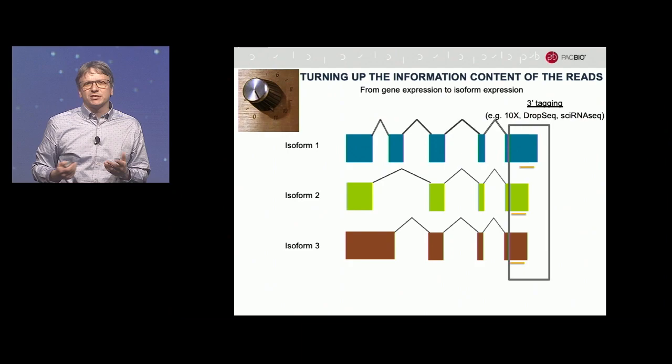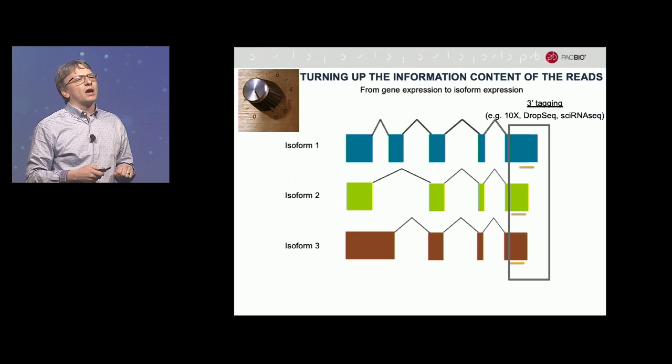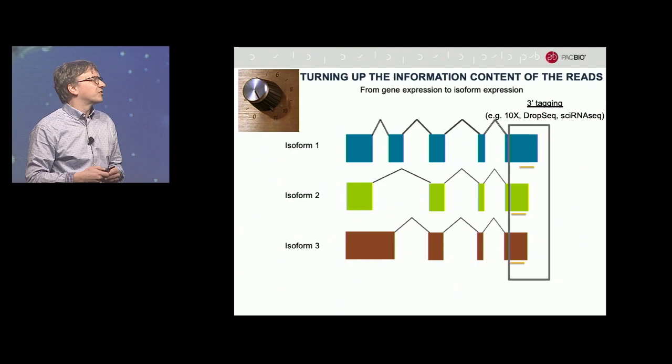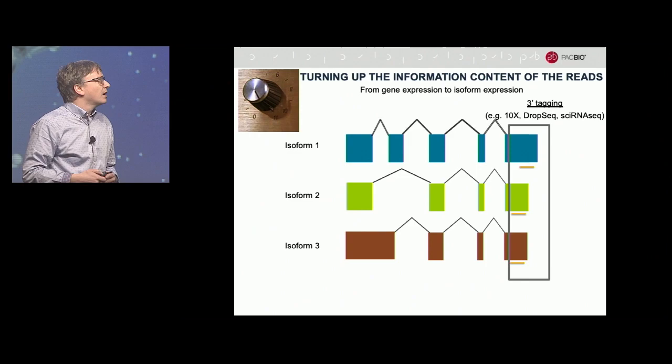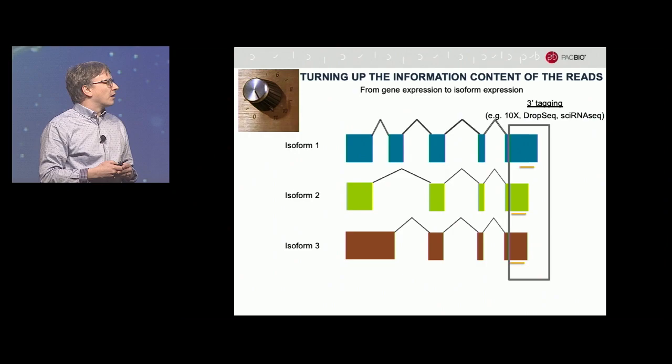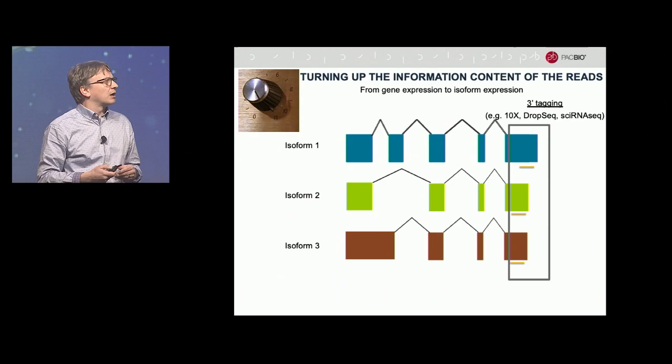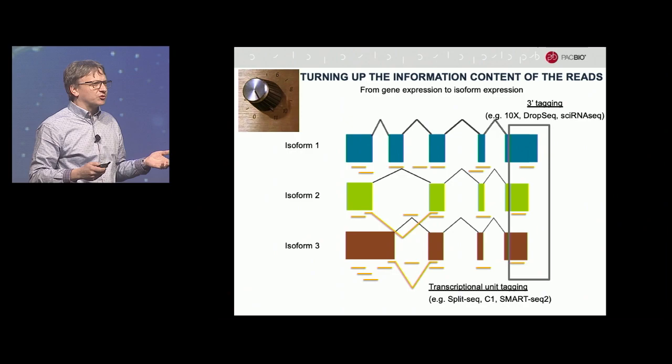What I'm going to tell you about today is where we're turning the knob down on the number of cells and turning the knob up on the amount of information contained in those reads. We want to capture information about isoforms. The ways of going about sequencing in the single-cell space are often through 3' tagging, which generates a small tag in the 3' UTR, or the I-term transcriptional unit tagging, where short tags are distributed along the entire molecule, often in introns as well, and you do capture some junction information to tell something about splicing.